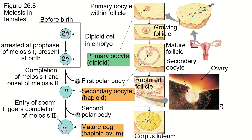At puberty, some of them each month start the process of finishing meiosis. Only one, theoretically, finishes meiosis completely.